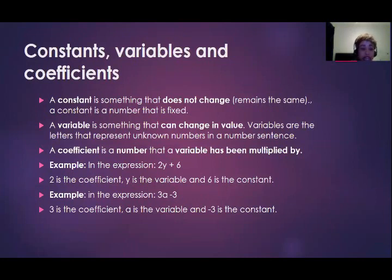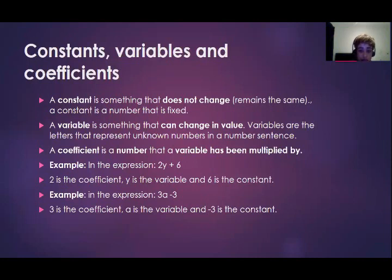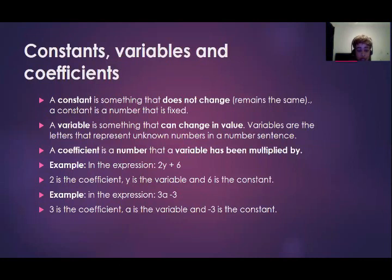For example, given the expression 2y plus 6, if asked to identify the constant, variable, and coefficient: the 2 is the coefficient — it is the number the variable is multiplied by. The y is the variable — it can change in value; you can substitute any number into y. The positive 6 is the constant — 6 is 6, it doesn't change. In another example, 3a minus 3: the first 3 is the coefficient, a is the variable, and minus 3 is the constant.